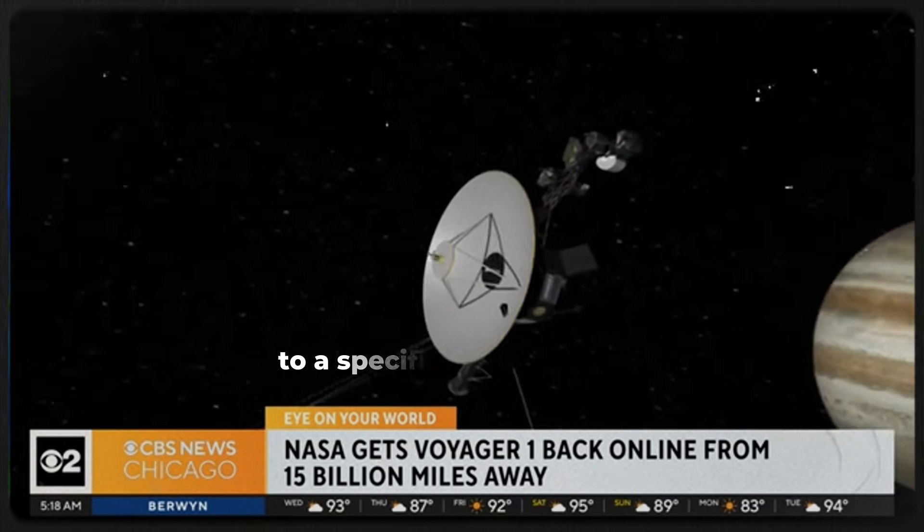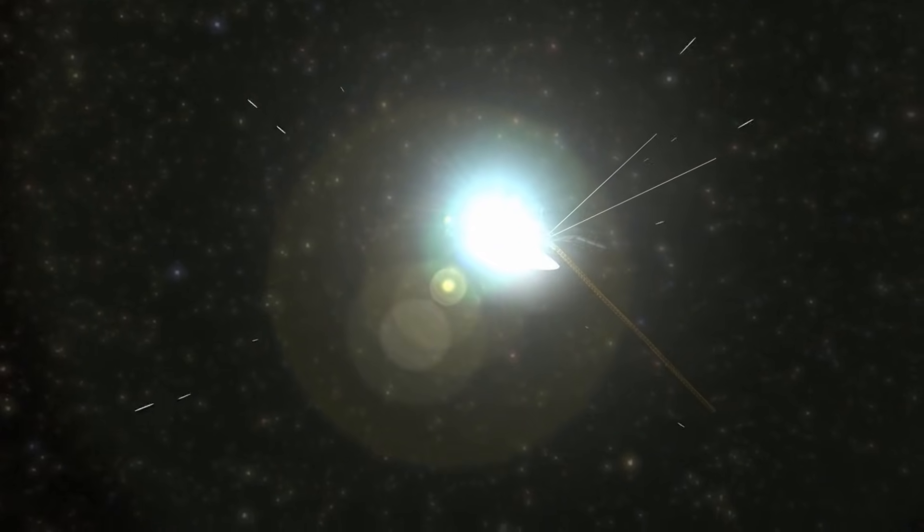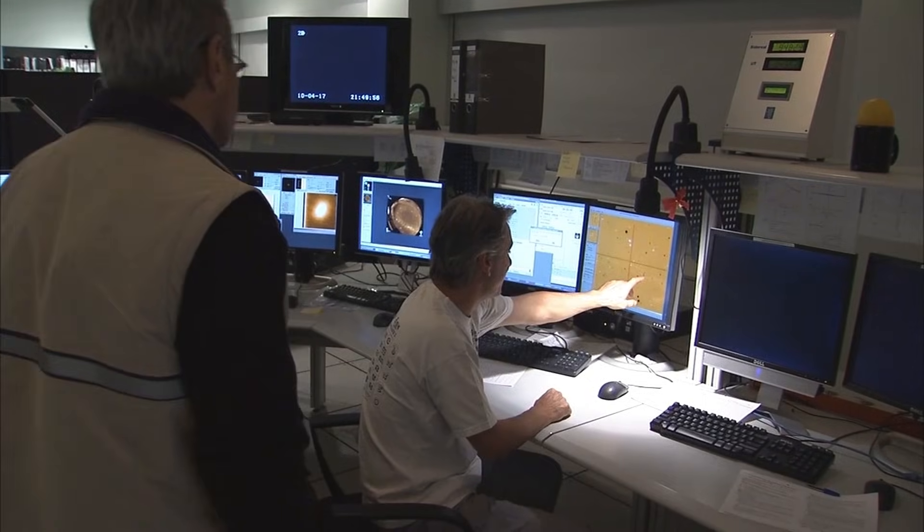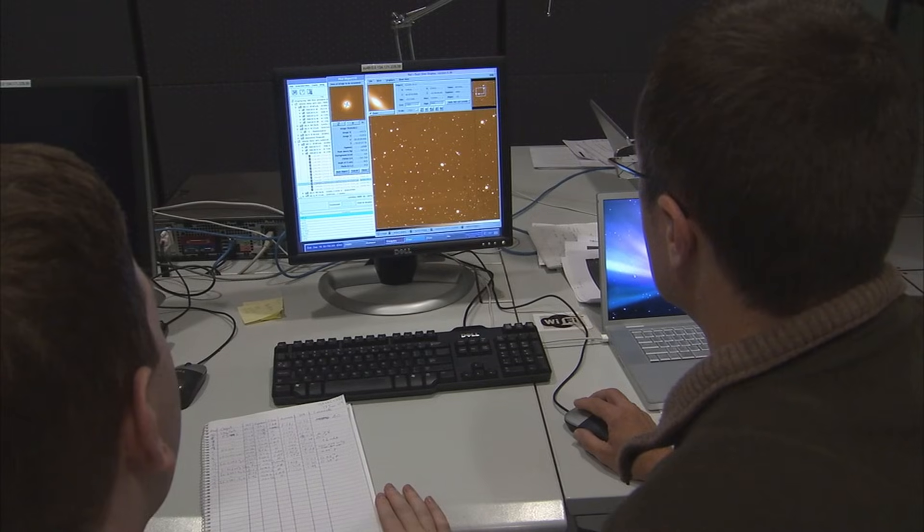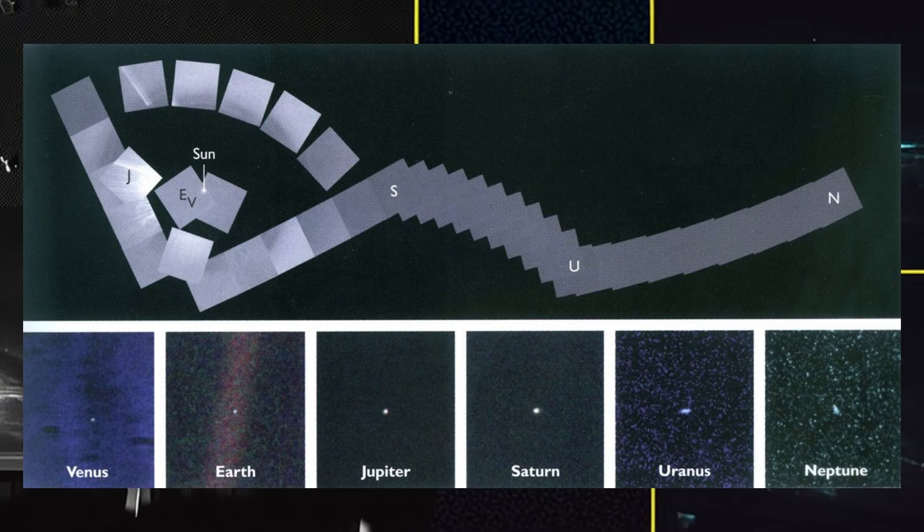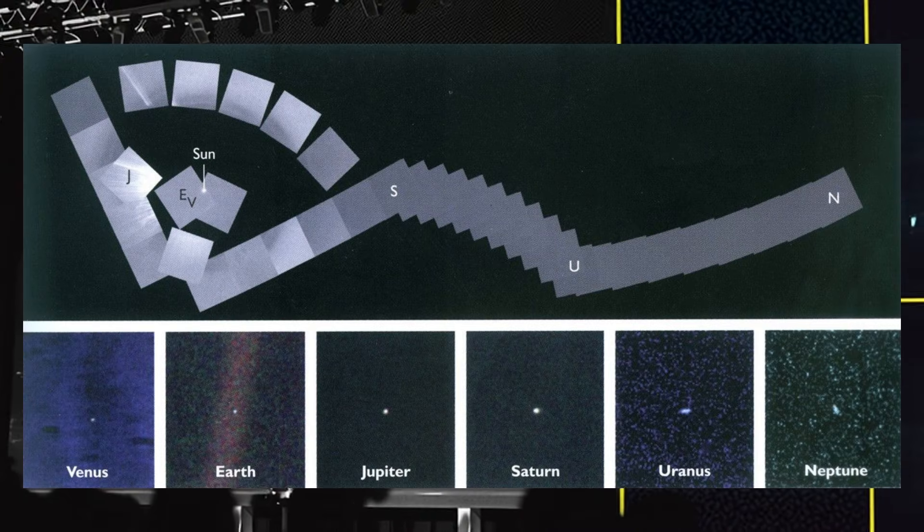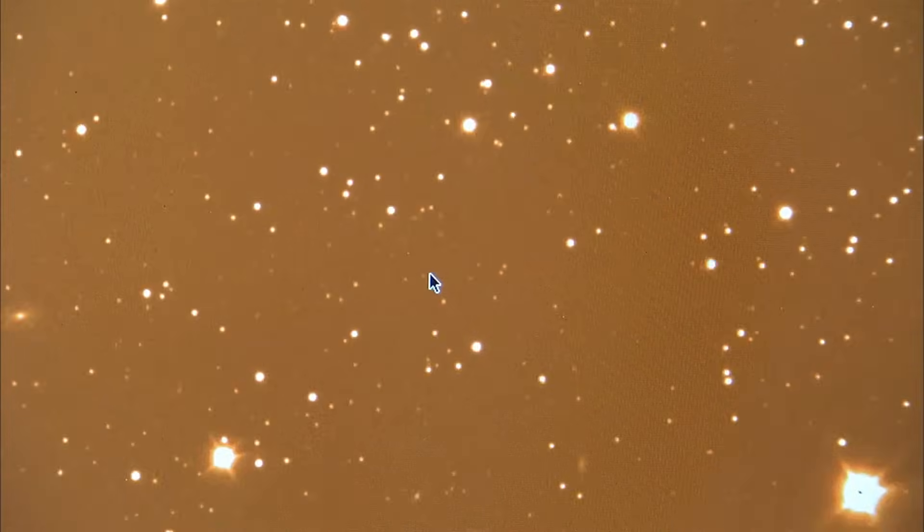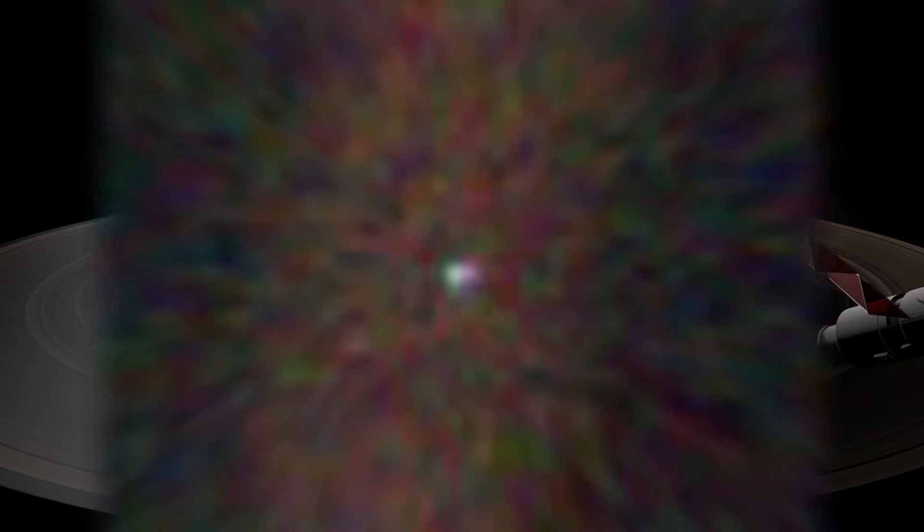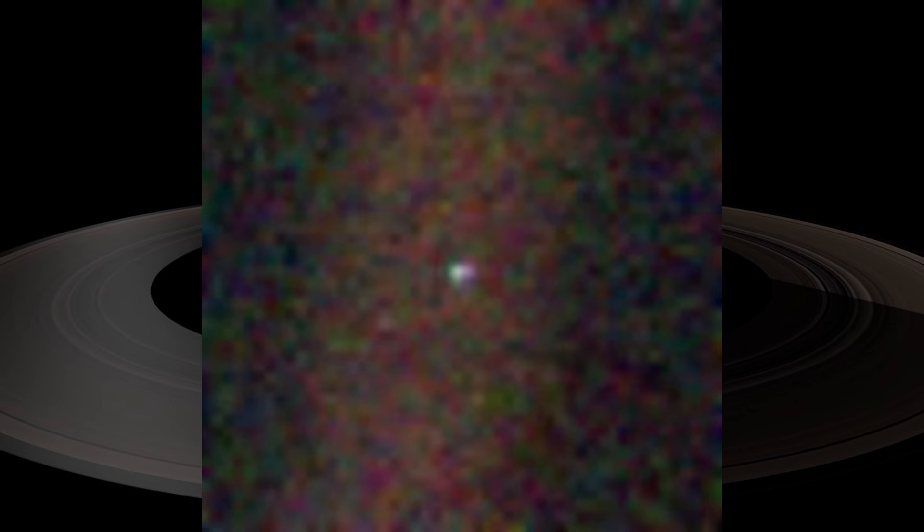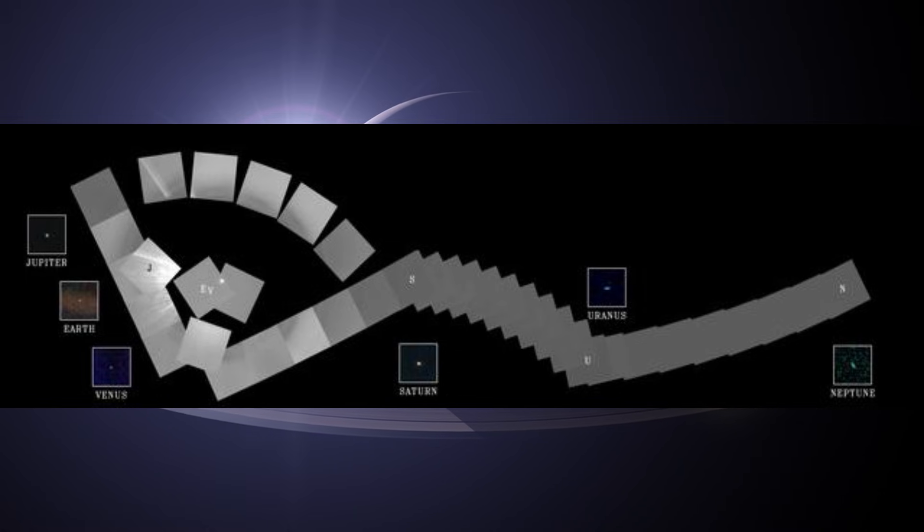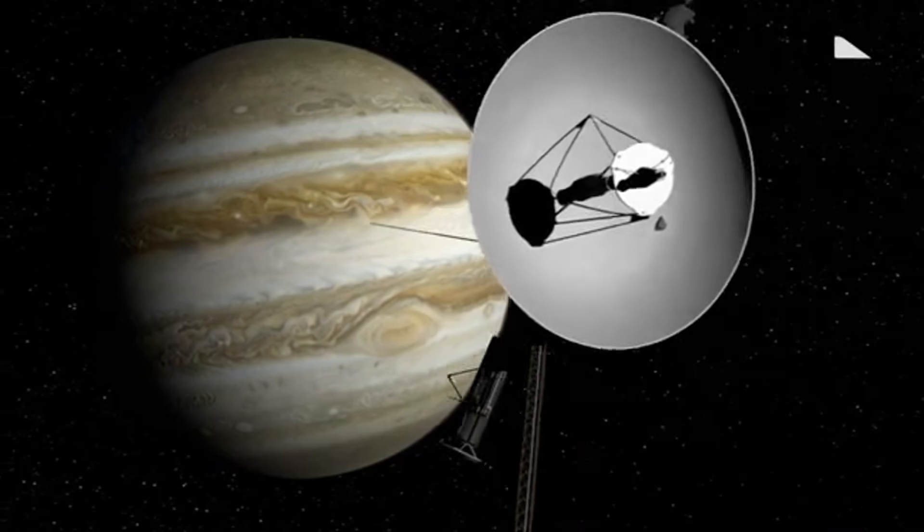Before both Voyager spacecraft crossed into interstellar space, long before their signal grew faint and their instruments were shut down one by one, they sent us a gift. A series of photographs, the last images they would ever capture. After visiting the giant planets, after transforming our understanding of the solar system forever, Voyager 1 turned its camera back toward home, a maneuver no spacecraft had ever attempted before. Through a sequence of 60 images, it recorded a portrait of our solar system. These became the Voyager mission's final images. But although this portrait is extraordinary, it doesn't give us the full story.